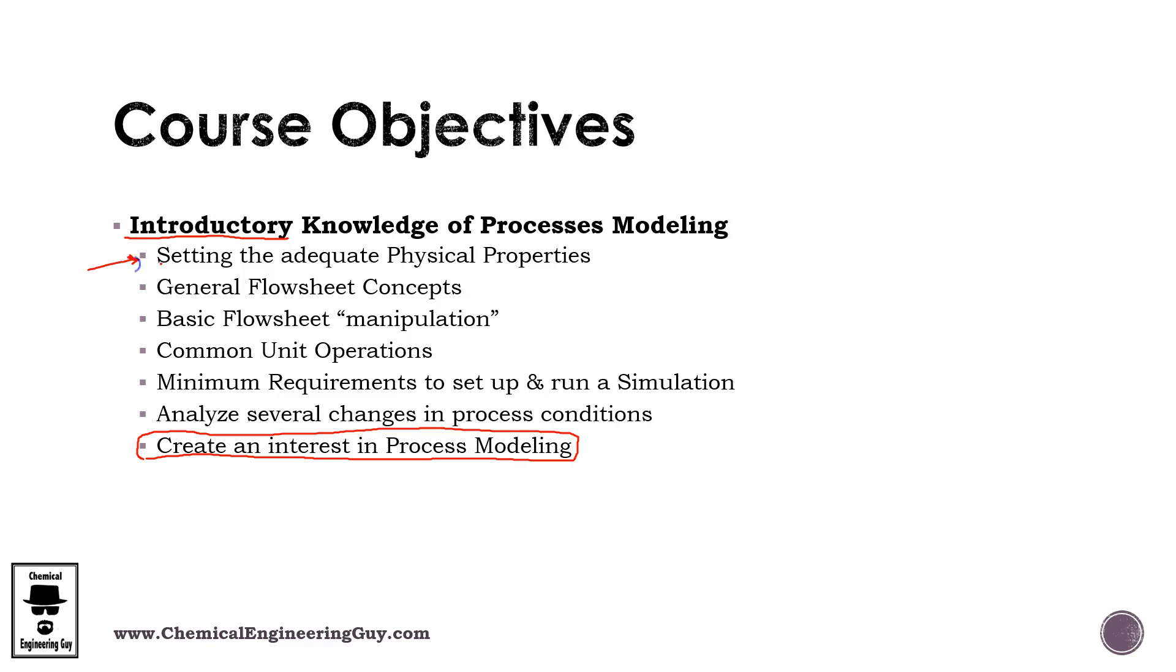First I want you to understand how to set up the minimum requirements to get a physical property full. That will be the component list and the property method, which one to select, why and so on.